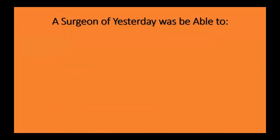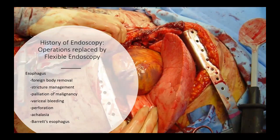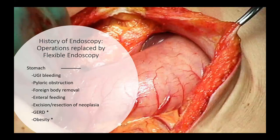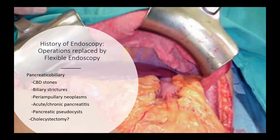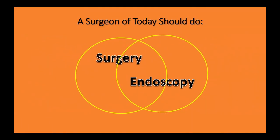Why is this important? In days of old, surgeons did very little endoscopy — there was a small overlap with more forward-thinking surgeons, but almost everything was done surgically. Now, looking at how these operations are done, you'll see over the next few slides a number of previously open operations that were dominated by surgery. These are now either not done at all by surgery or very infrequently, having been replaced by endoscopy — whether in the esophagus, stomach, biliary tree, pancreas, or small and large intestine. This list is ever growing, making endoscopic skills increasingly important for the surgeon of today.